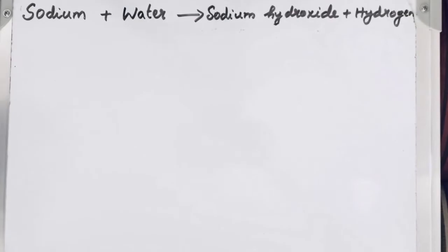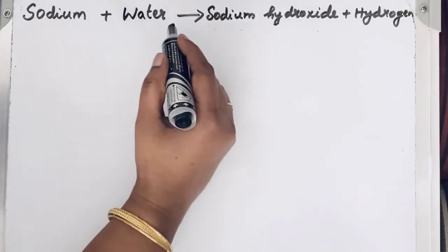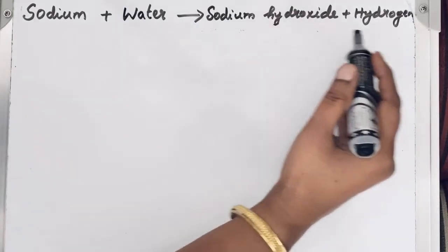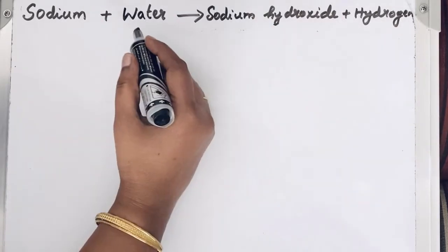Welcome to Aurora chemistry for everyone. Sodium plus water gives sodium hydroxide plus hydrogen. This is a word equation.